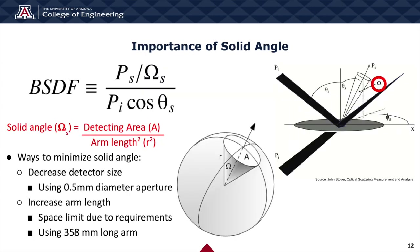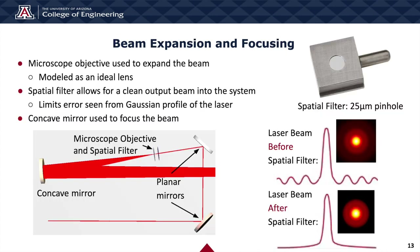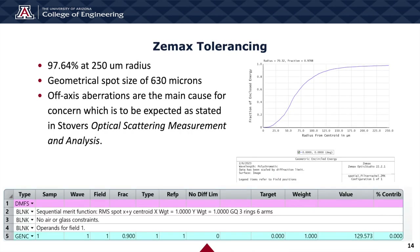On the optomechanical side, our main challenge was beam expansion and focusing. Beam expansion and focusing optimizes the solid angle from the detector to the area at which light hits the sample, which is important for calculating the BSDF. We chose a microscope objective to expand the laser beam and a spatial filter to clean up the beam. Beam expansion fills the concave mirror, which focuses light onto the sample and then to the detector. The spatial filter limits error from the Gaussian profile of the laser. Tolerancing was performed to ensure all components had correct precision tools or could be placed by hand, verifying that encircled energy at the detection plane was no less than 91% at 500 micron diameter.